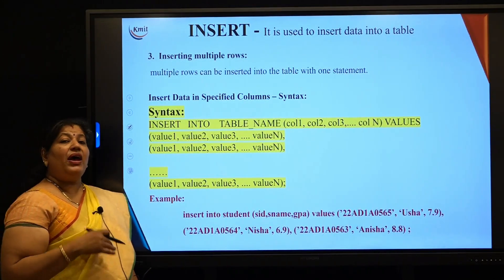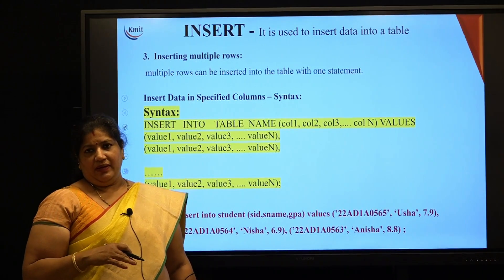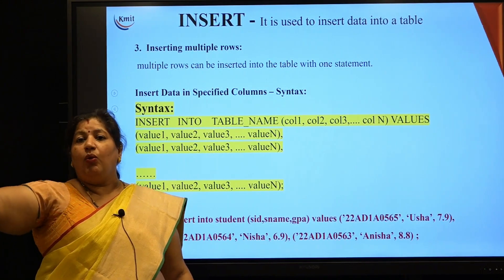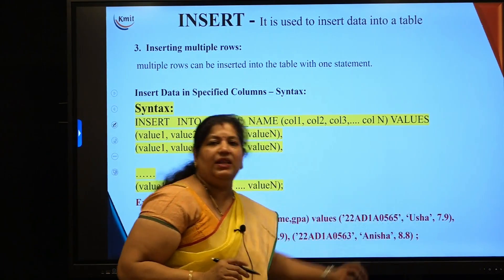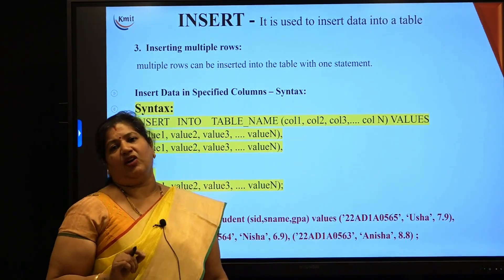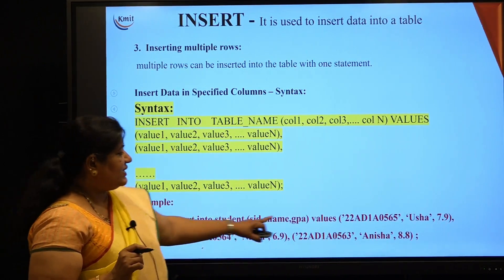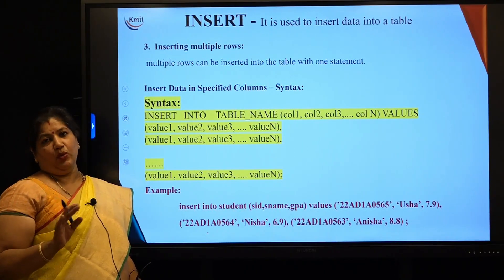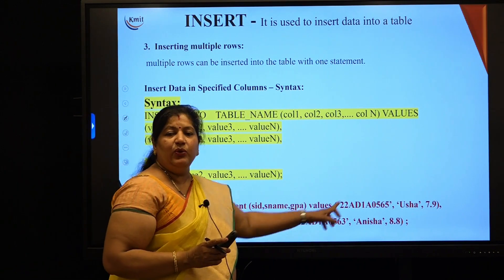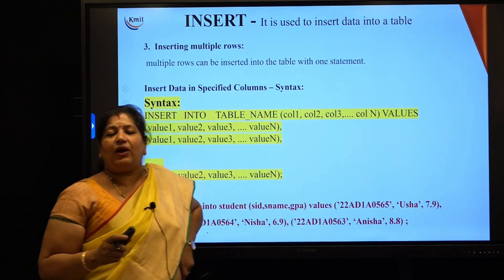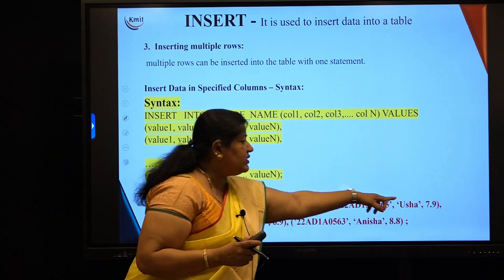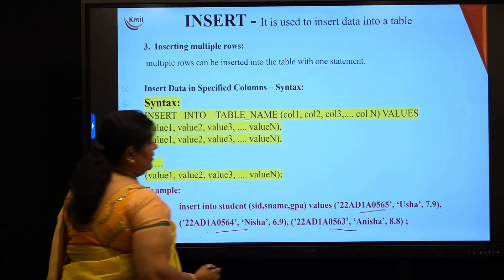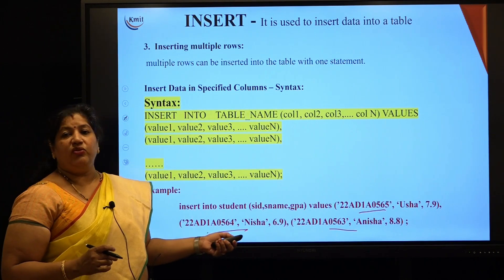The third option is inserting multiple rows at a time. In a single INSERT statement — INSERT INTO table_name VALUES — each set of values is enclosed in brackets. To continue, use a comma as a delimiter and give the next set of values. This way you can insert multiple rows at a time. Each set of values, that is each record or row, is enclosed in brackets separated by commas.